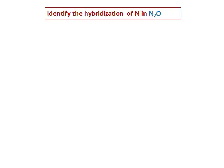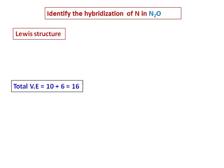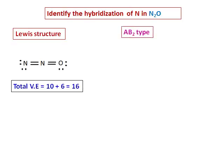Now identify the hybridization of nitrogen in N2O. Calculating the valence electrons: 10 plus 6 gives 16 total. The Lewis structure shows two double bonds between the nitrogens, making it an AB2 type molecule with two atoms and no lone pair.